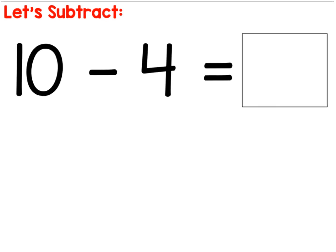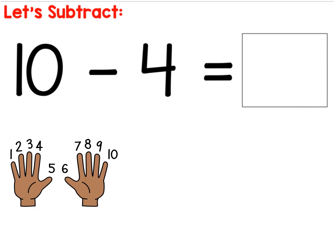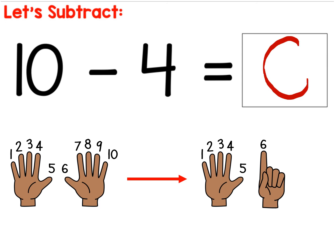Ten minus four. Go ahead and put up all ten fingers. Now we're going to take minus four, so that means put four down. So put down one, put down two, put down three, put down four. Go ahead and count how many you have. It should look like this. One, two, three, four, five, six. Ten minus four equals six.